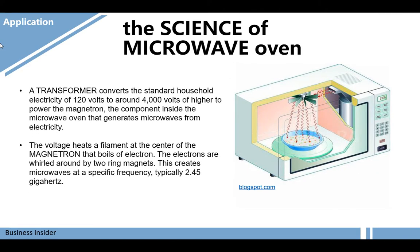Let's discuss the science of the microwave oven. A transformer converts standard household electricity of 120 volts to around 4,000 volts to power the magnetron, the component inside the microwave oven that generates microwaves from electricity. The voltage heats a filament at the center of the magnetron that boils off electrons. The electrons are whirled around by two main magnets, creating microwaves at a specific frequency, typically 2.45 gigahertz.